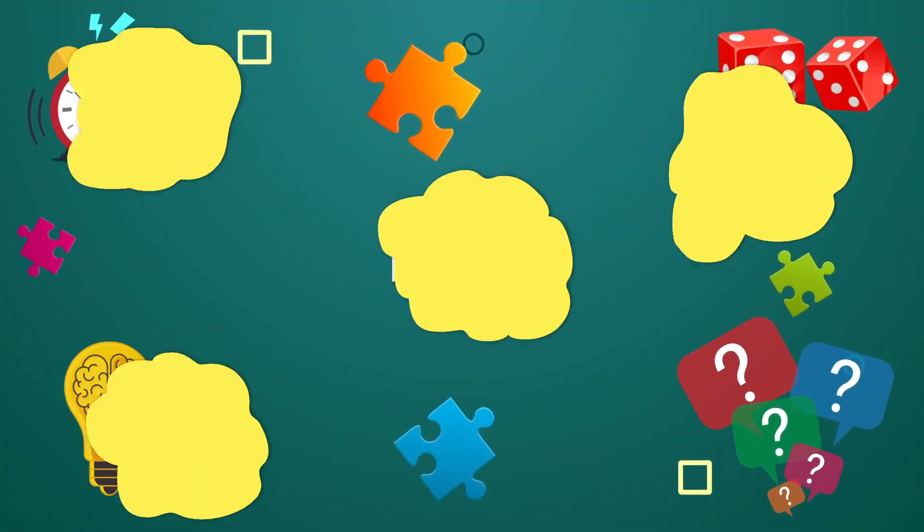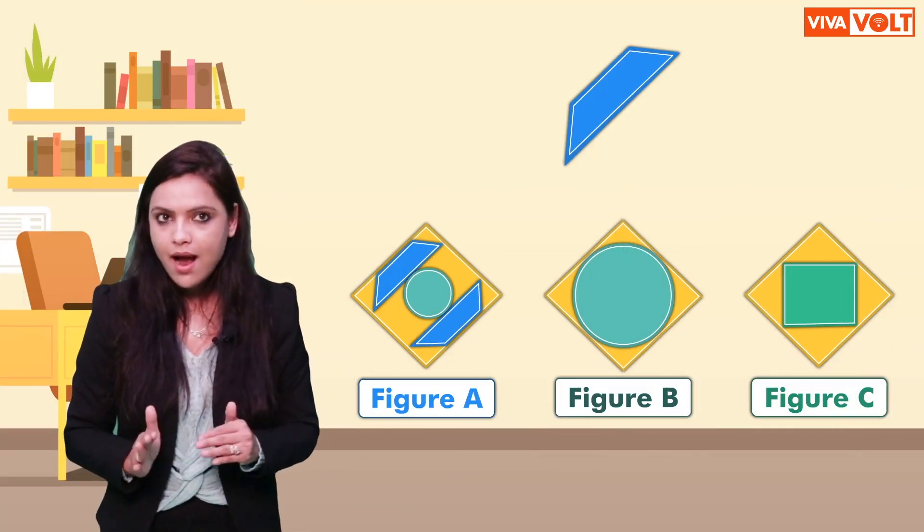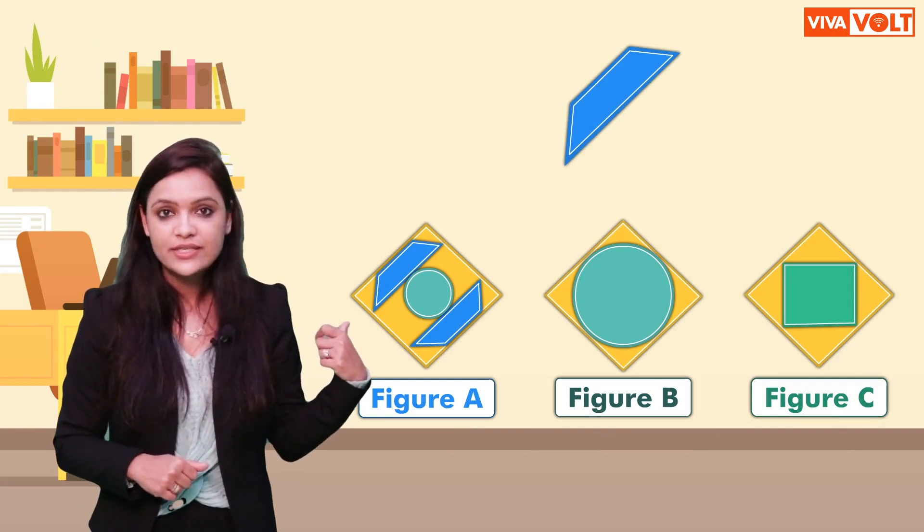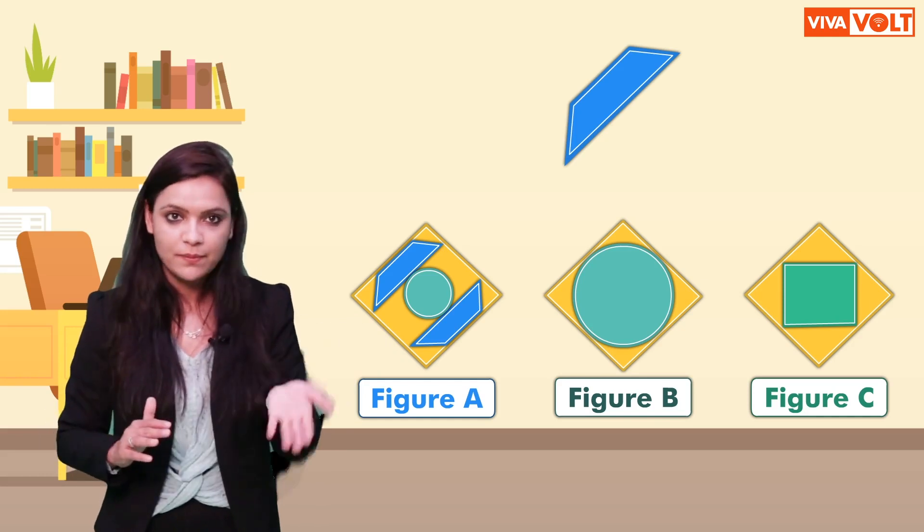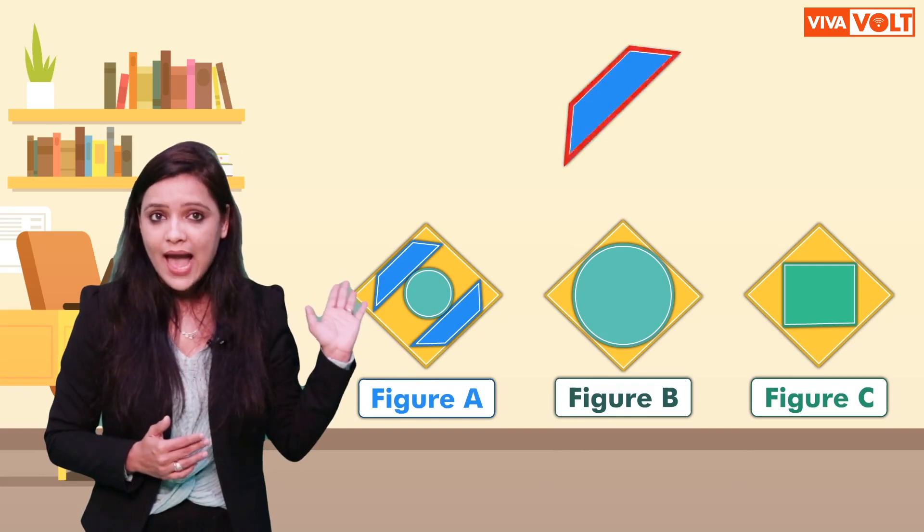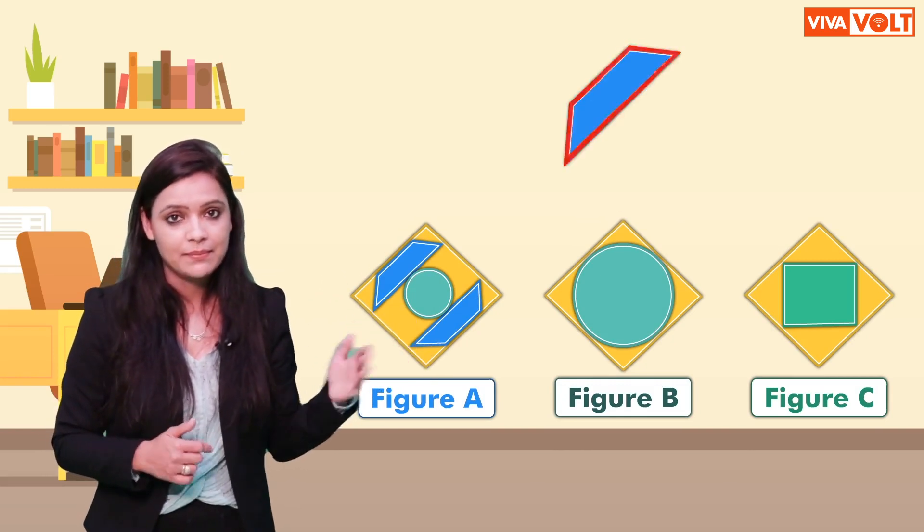In these problems, the learners will be asked to identify the figure in which the given figure is embedded. So it's opposite of Type 1. Let's look at the example. Identify the figure in which the given figure can be embedded.